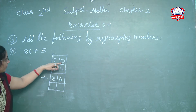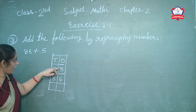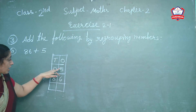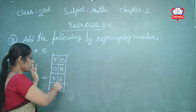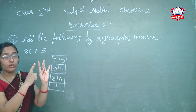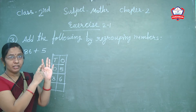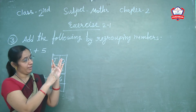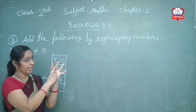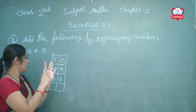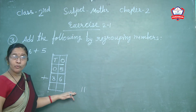First start the ones column. First digit is 5 and next is 6. Count 5 lines, then count 6 more lines. Counting all lines: 1, 2, 3, 4, 5, 6, 7, 8, 9, 10, 11. Which number? 11.